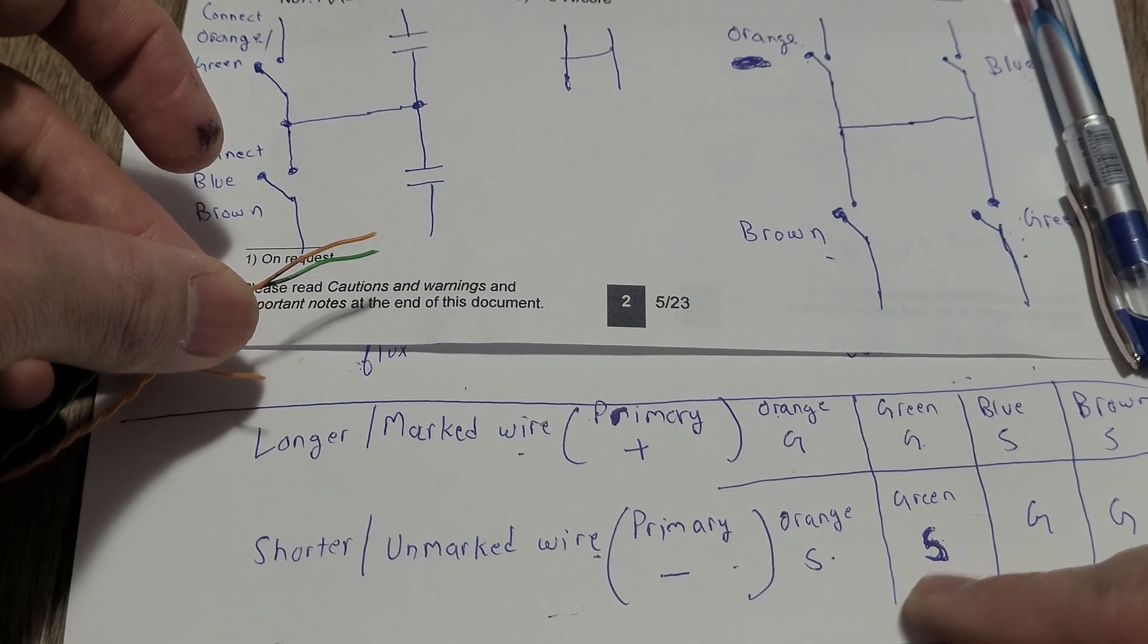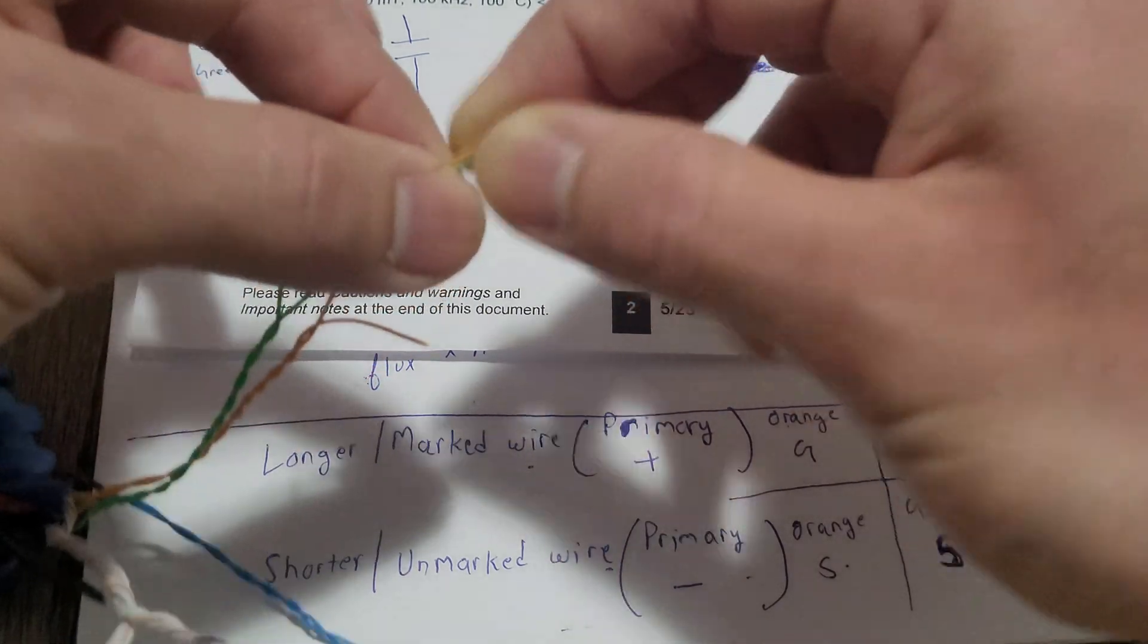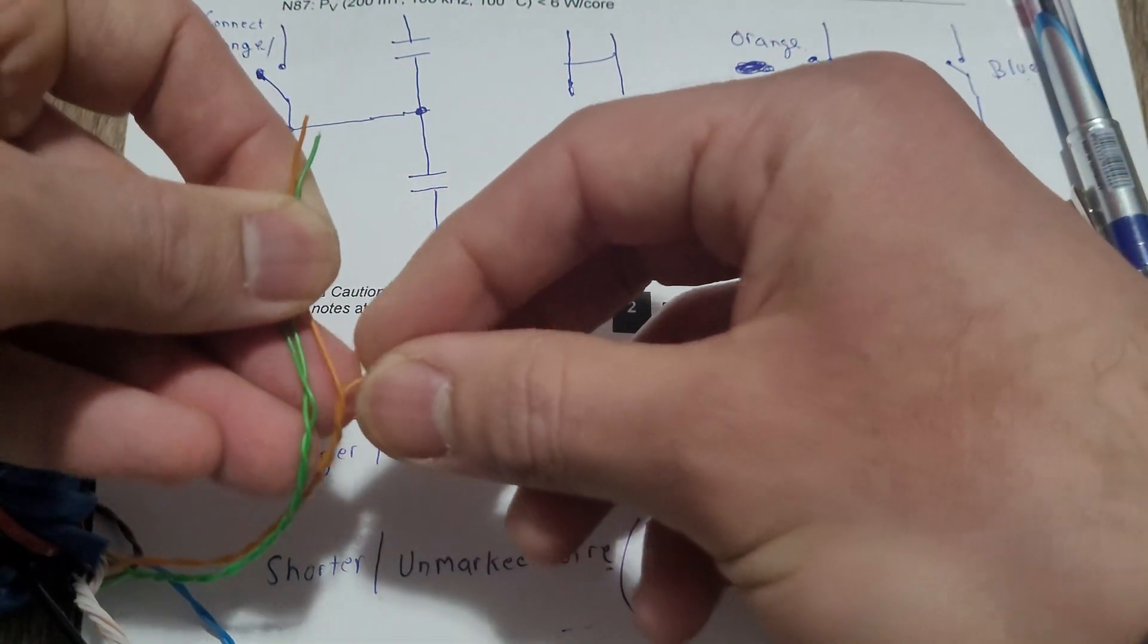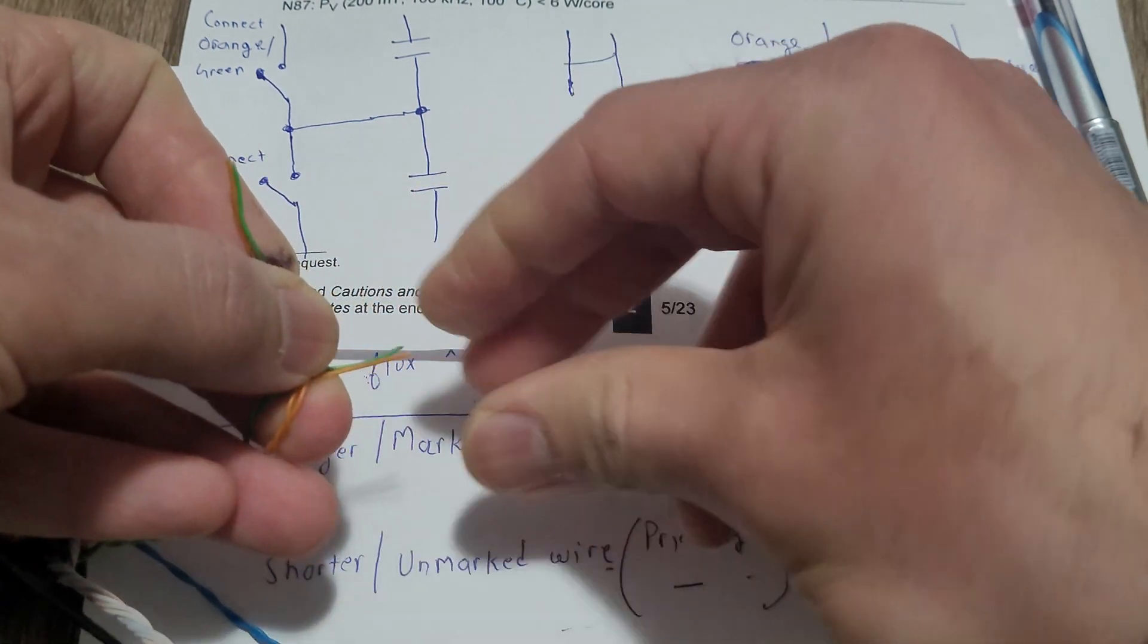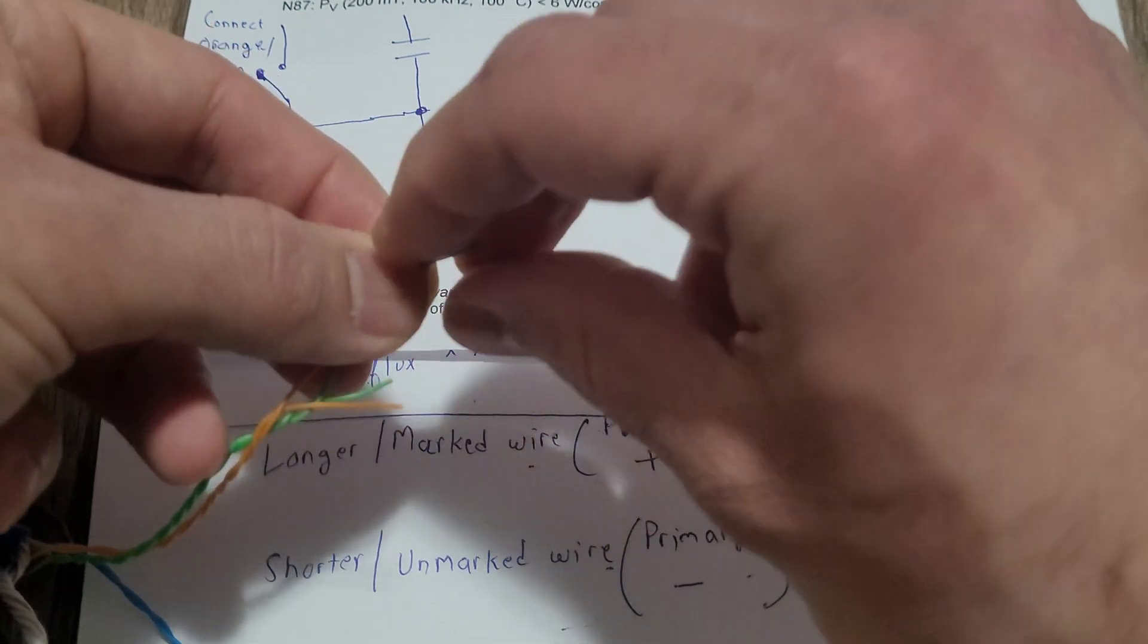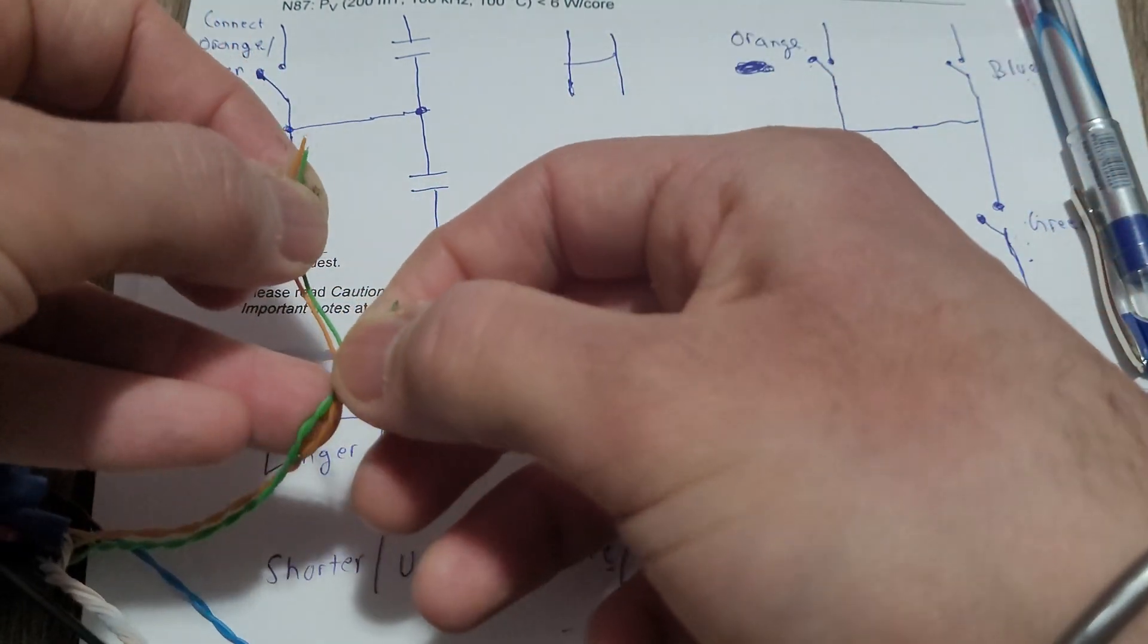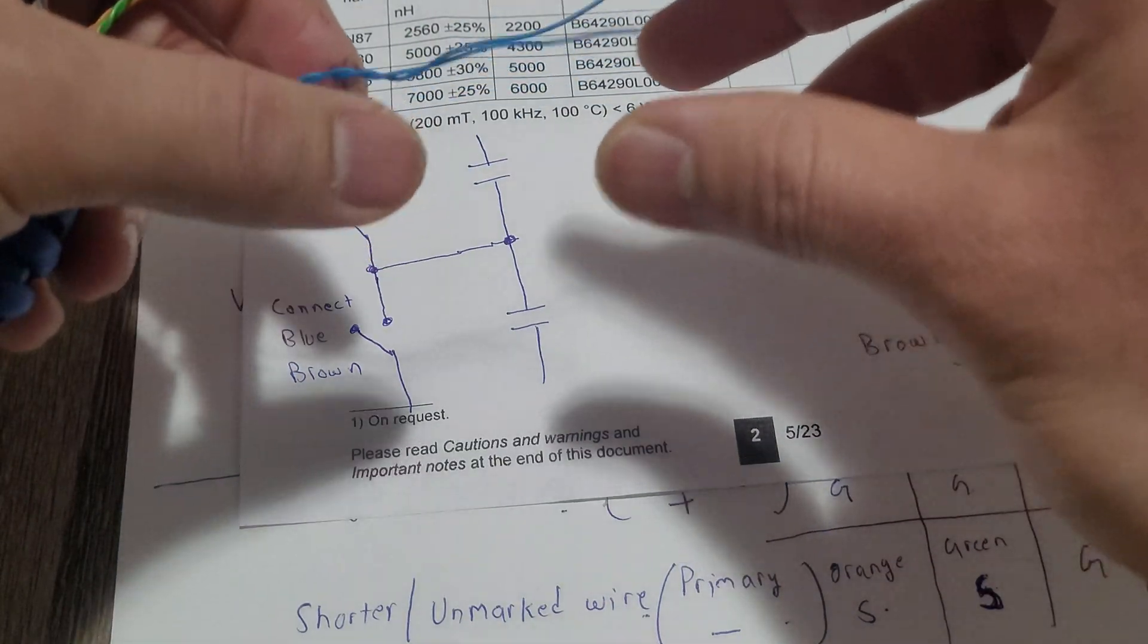So the same story for the blue and brown, just connect them together. Longer ones connected together, the shorter ones connected together. The shorter ones connected together.